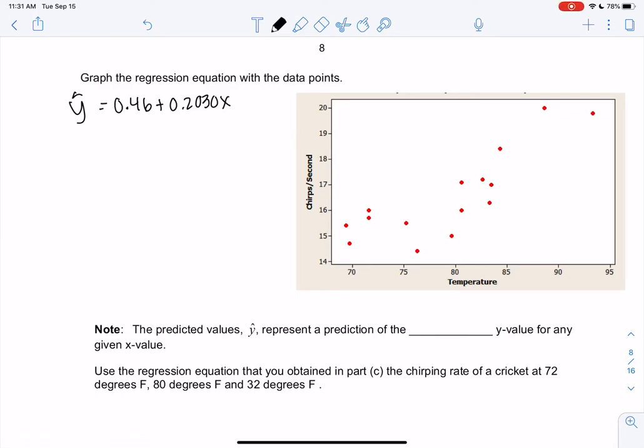All right, let's continue with example three and the crickets chirping. We've already seen this scattergram a couple videos ago, and now we're going to add the equation of the line to the data points. We found the line last video: y hat was 0.46 plus 0.2030x.